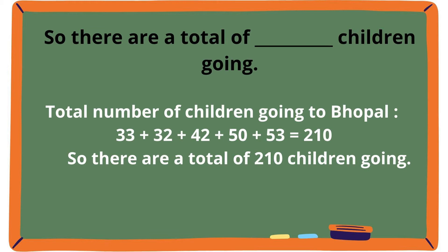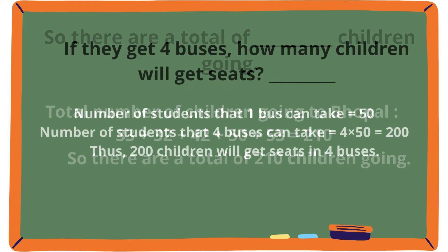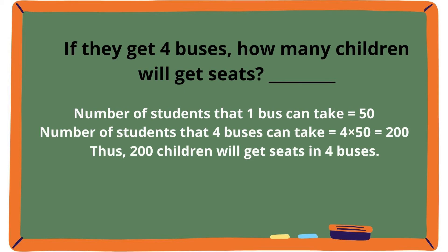There are a total of 210 children going. If they get 4 buses, how many children will get seats? The number of students that one bus can take is 50. The number of students that 4 buses can take is equal to 4 multiplied by 50, which equals 200. So, 200 children will get seats in 4 buses.